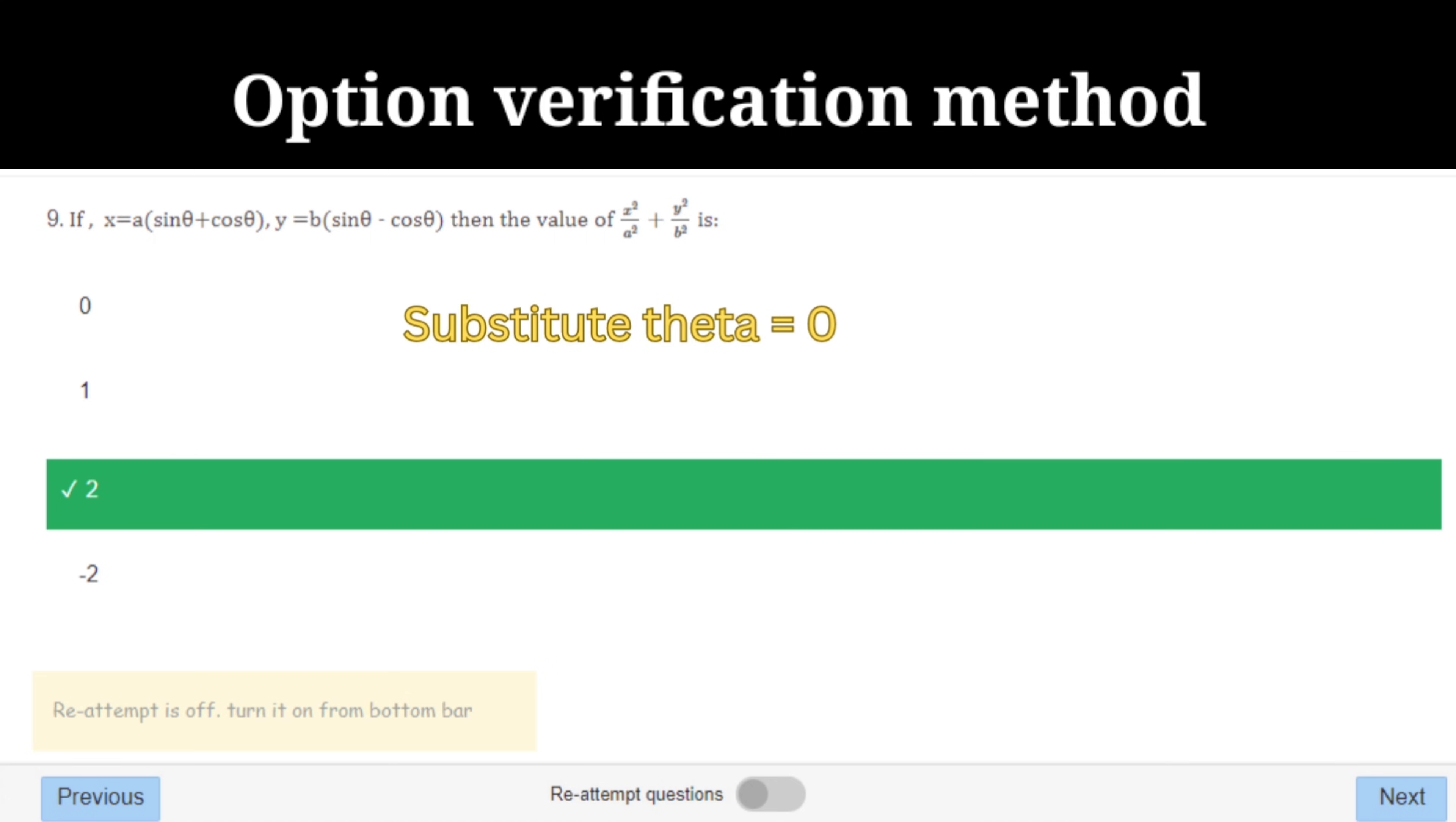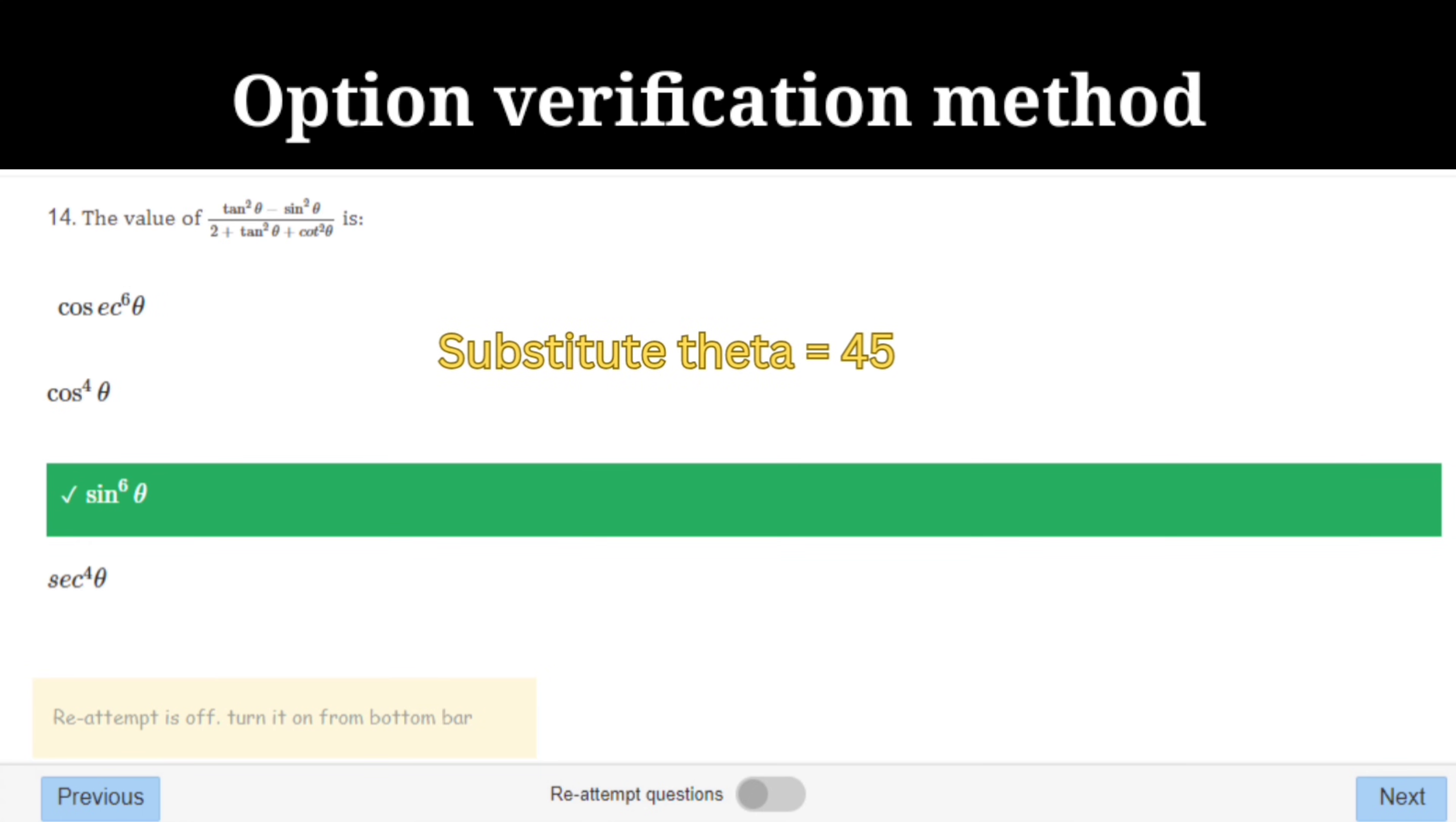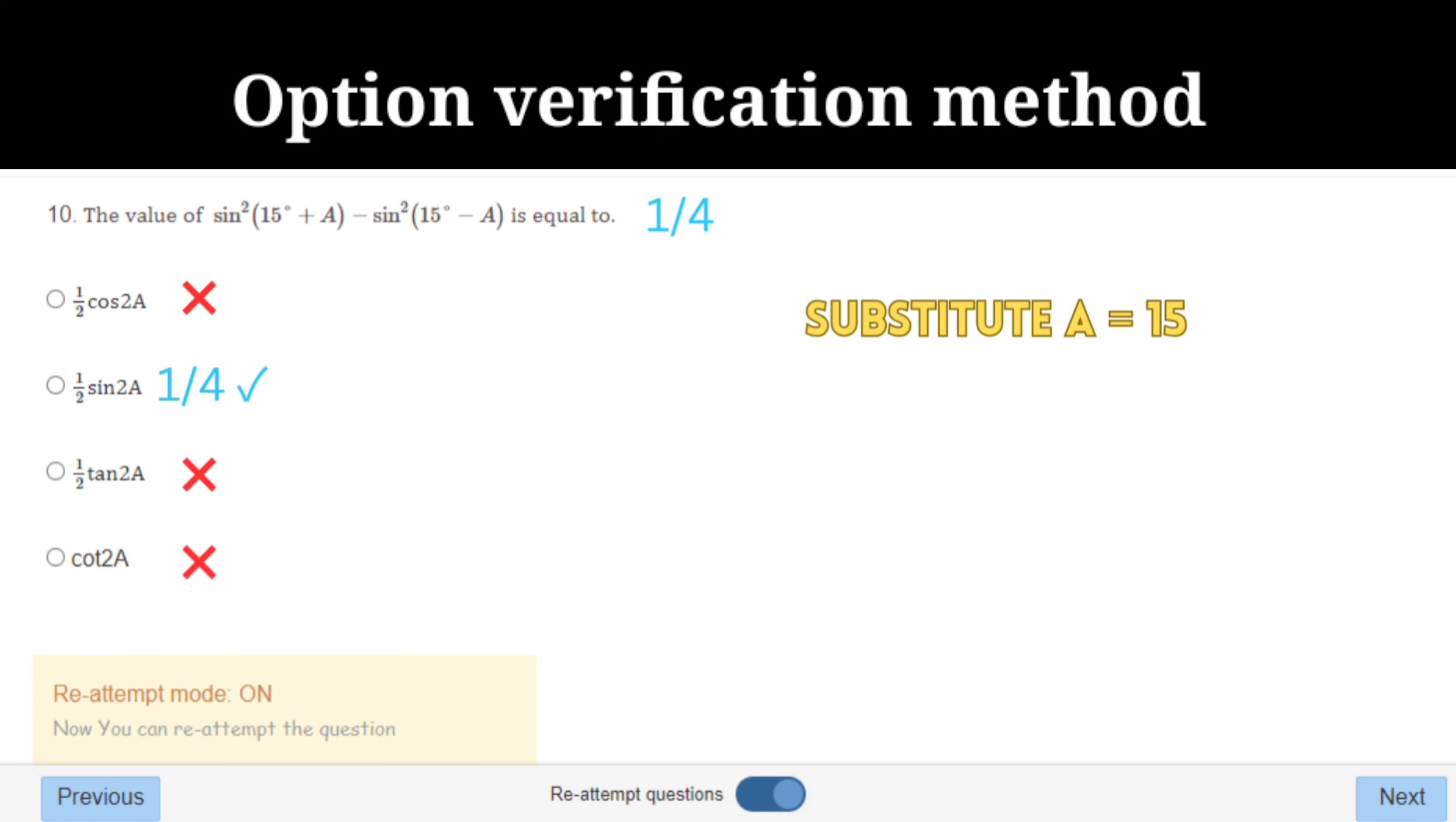When it comes to trigonometry, instead of solving the entire sum, you can always substitute some value. For instance, here substitute theta equal to 0. Similarly, when it comes to tan, substitute theta equal to 45. Here, just substitute a equal to 15.